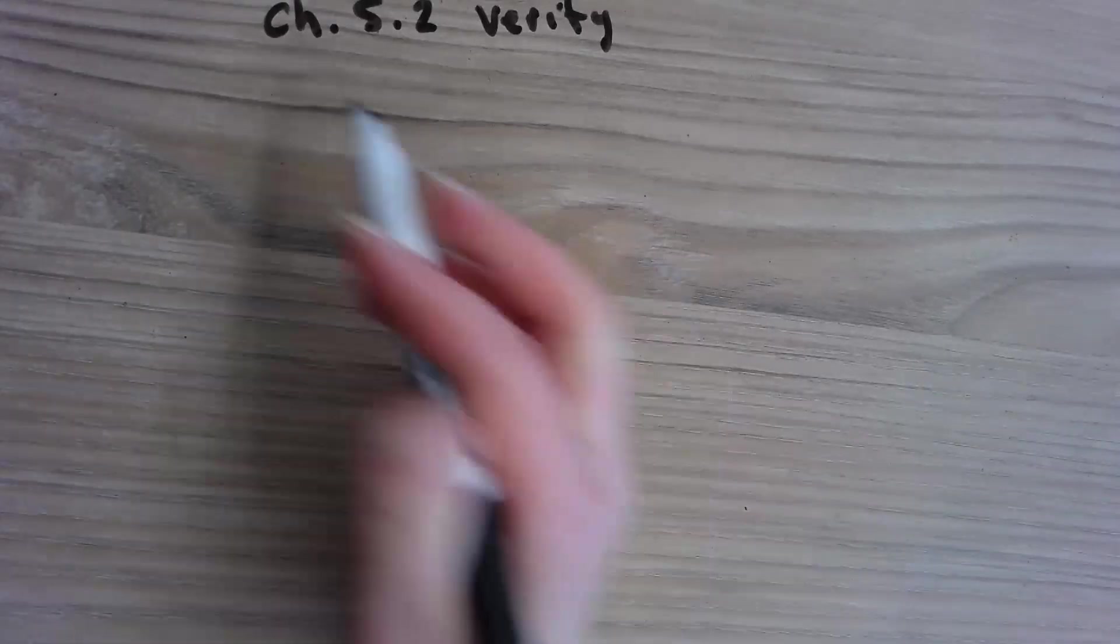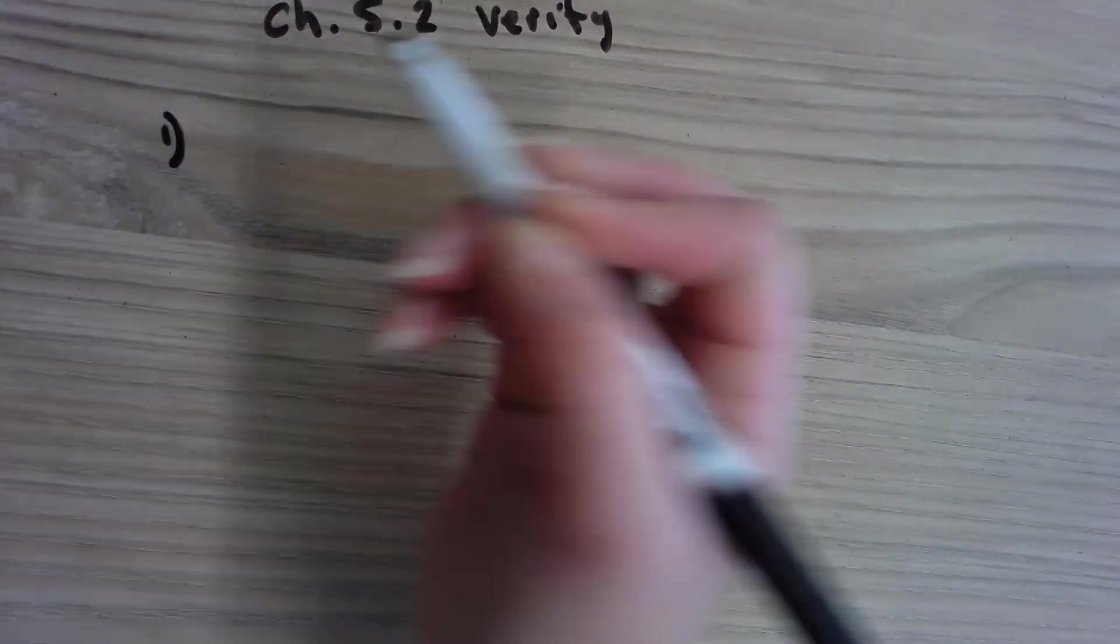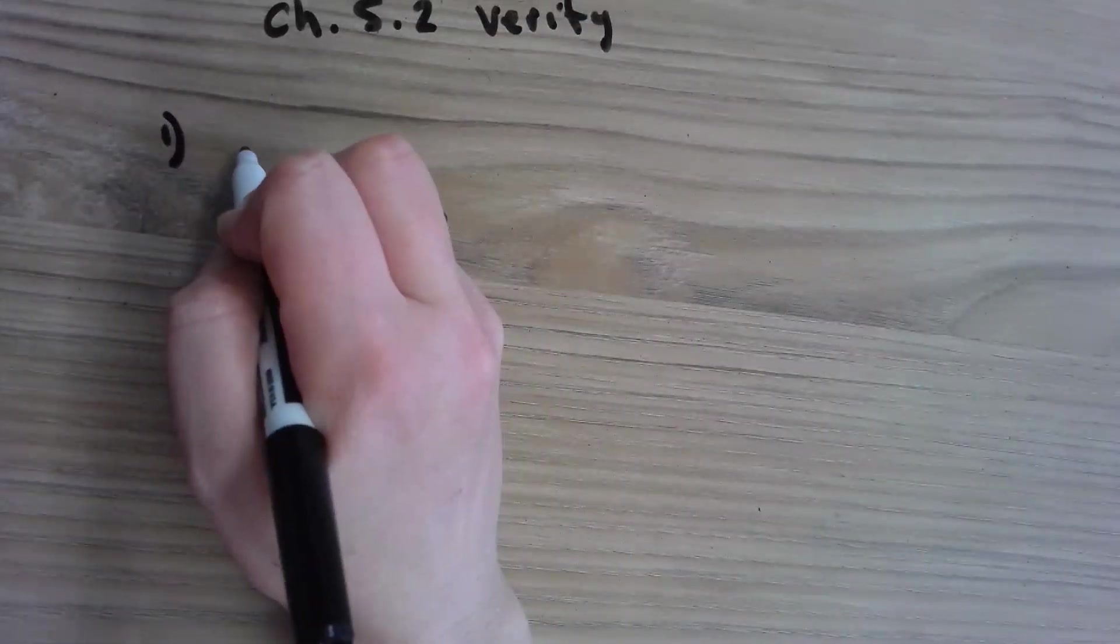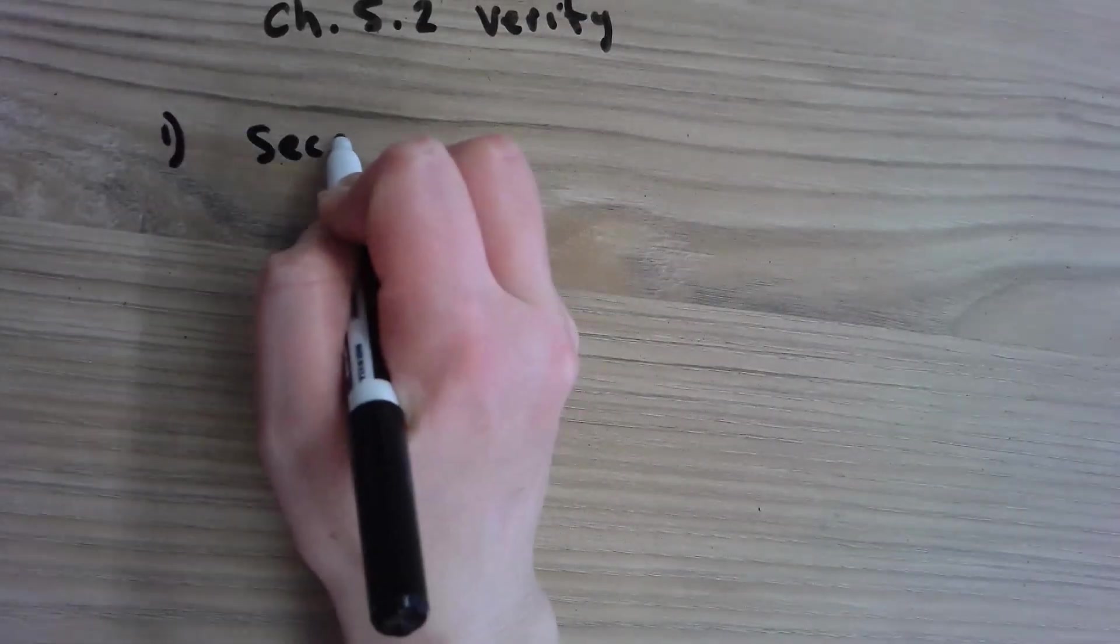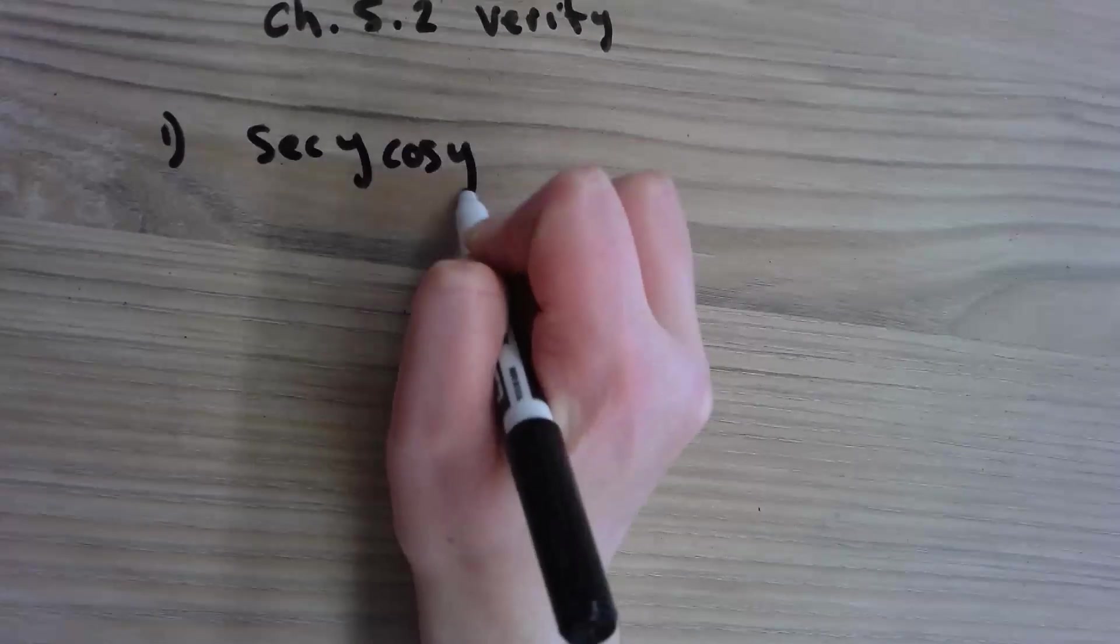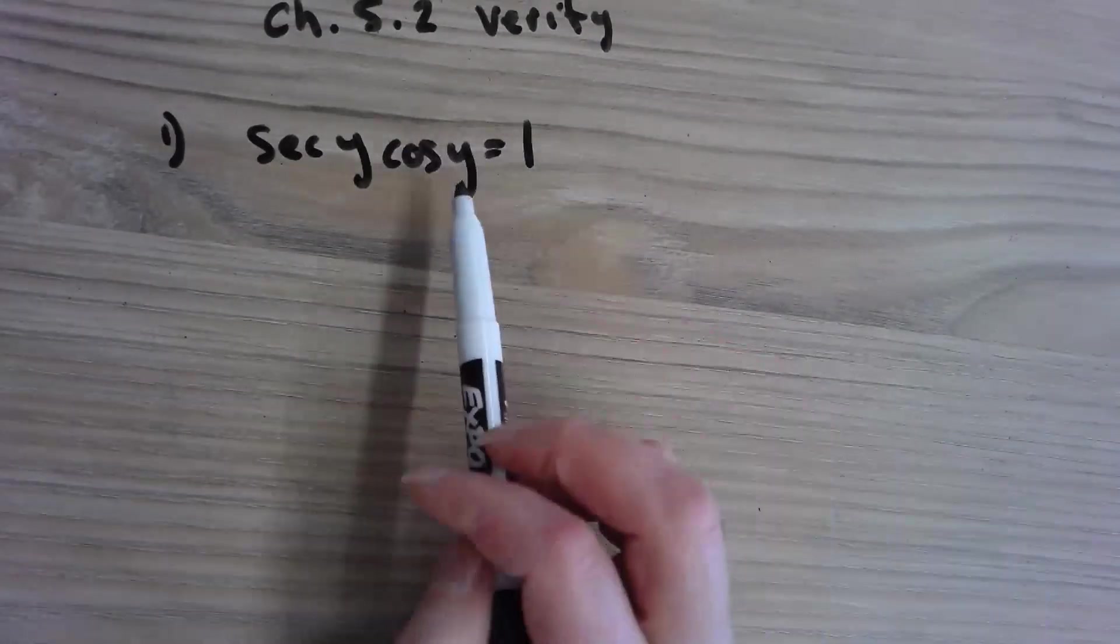We're just going to jump right into it. They'll give you a problem and let's say we have secant y cosine y equals 1.